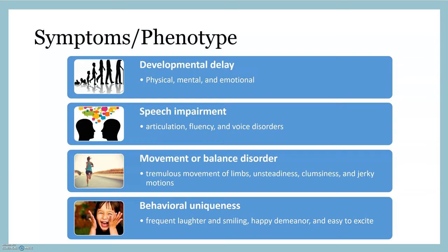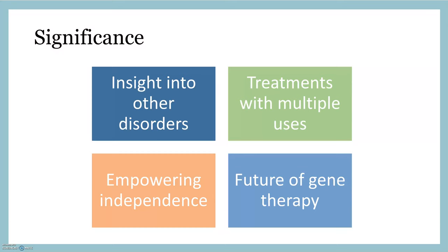This disorder, while rare, could have a major impact on society if a cure was discovered. Angelman syndrome is quite similar to other disorders like autism and cerebral palsy. A breakthrough in treatment for any one of these disorders could be used to treat many other similar conditions. Any degree of treatment could be critical in empowering the independence patients with disorders like Angelman syndrome have by reducing the symptoms they experience. Lastly, any insight gained from the research being done with gene therapy and Angelman syndrome could positively impact gene therapy used in the future for a wide range of conditions. Since everyone is at risk for having some type of gene mutation, this research impacts and is relevant to us all.